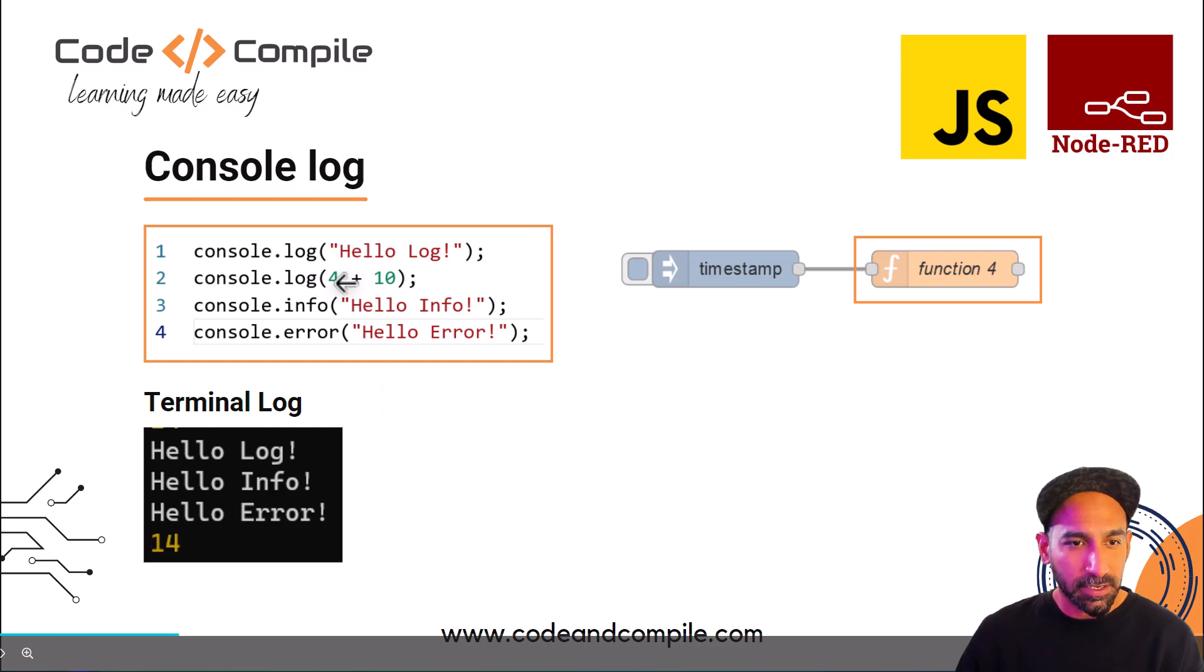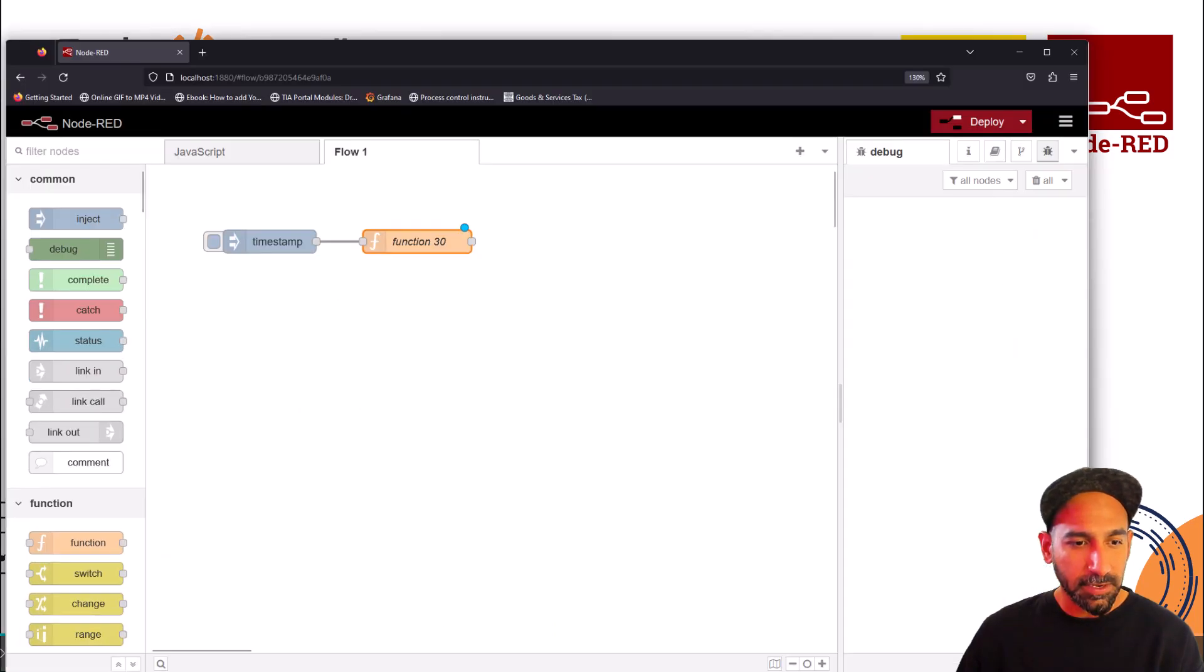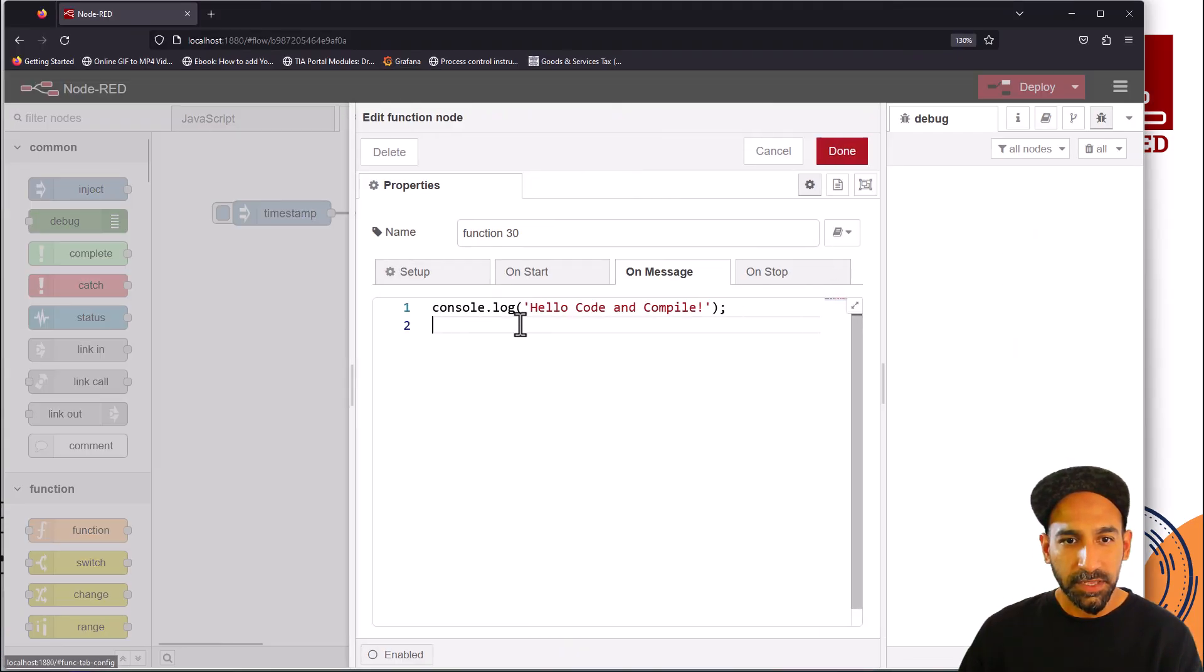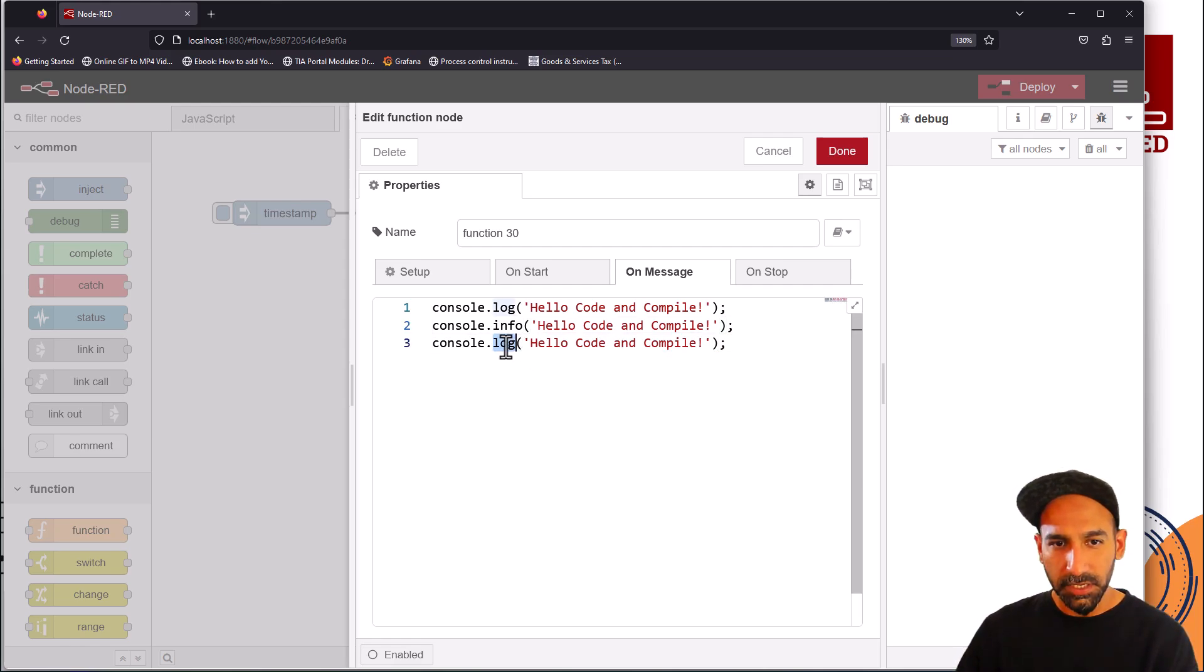Let's try these console.log functions here. I have my function node here with console.log which we saw in the last video. If I type here info, and here error, and in the last instead of string some numbers.